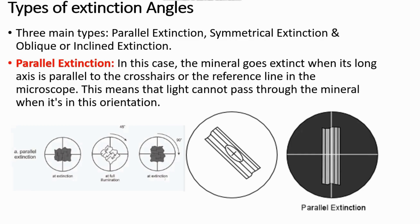We've got three types of extinction angles: parallel extinction, symmetrical extinction, and oblique or inclined extinction. With parallel extinction, it's self-explanatory. We always consider the long axis of a mineral — the longest axis. So with respect to the longest axis of the mineral, if this longest axis is parallel to the frame of reference line, then we say this is parallel extinction.